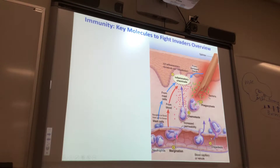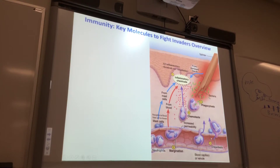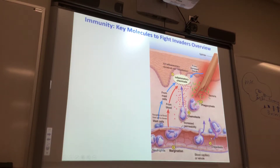The neutrophils marginate and then crawl through those leaky tight junctions in a process called diapodesis. 'Pedi' is foot, so these cells are walking or crawling through the leaky tight junctions to get to the battlefield. Because all these inflammatory chemicals are at the battlefield site, the neutrophils can do chemotaxis — they move along a chemical gradient to get to where the bacteria are, and then they do phagocytosis.